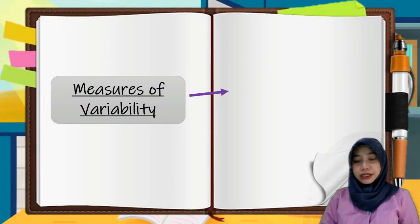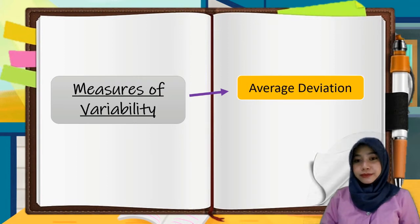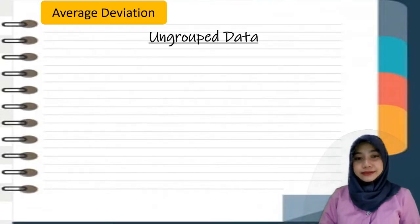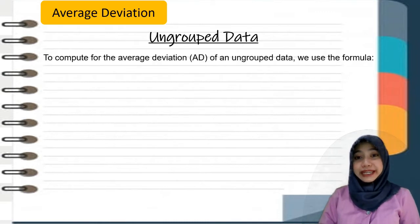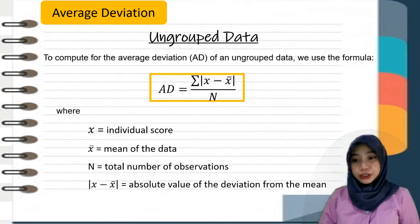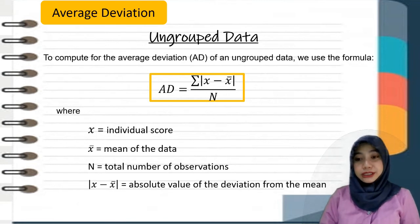We are now done with the range. Let's proceed with the second measure of variability, which is the average deviation. This is the average of the sum of the absolute difference of each measure from the mean, and gives a better approximation than the range. To compute for the average deviation, or AD, of an ungrouped data, we use the formula: AD = summation of the absolute value of x minus x-bar, over n. Where x is the individual score, x-bar is the mean of the data, and n is the total number of observations.